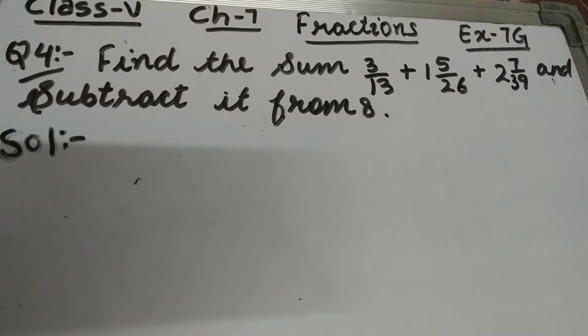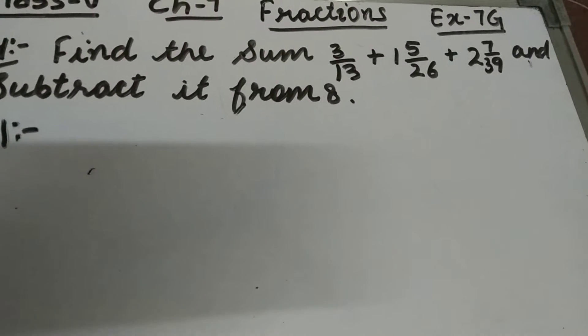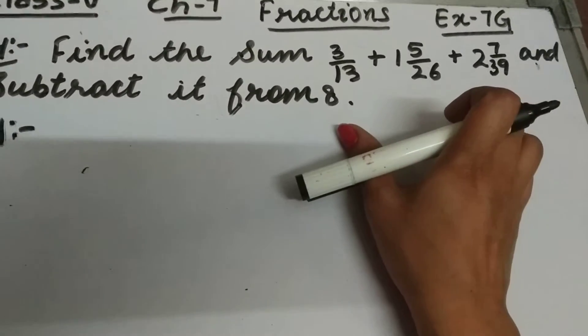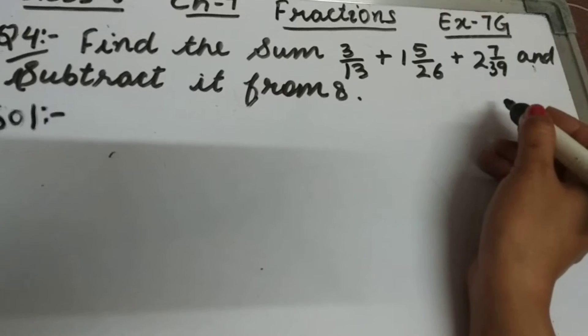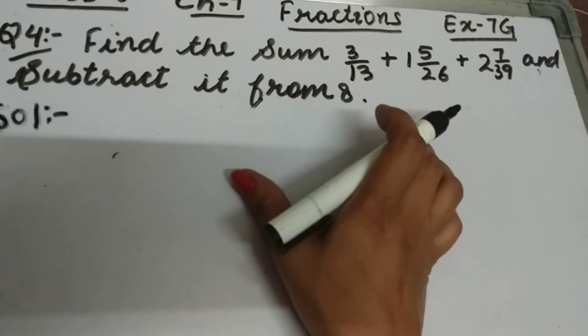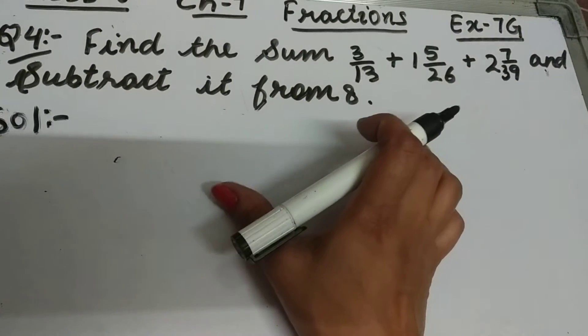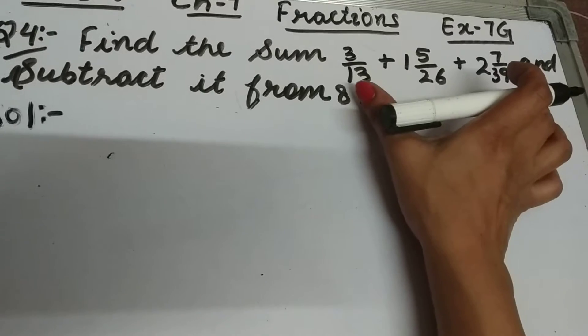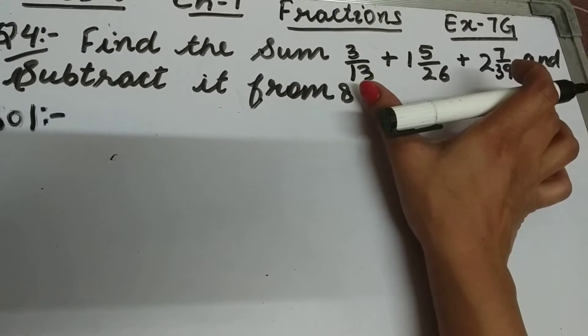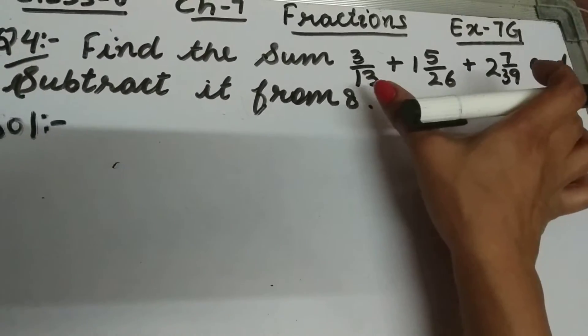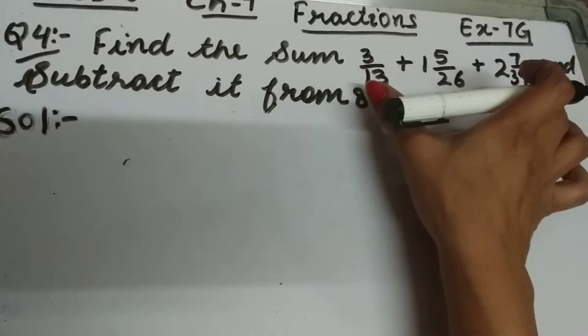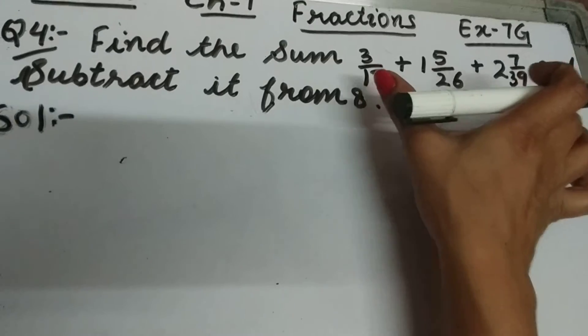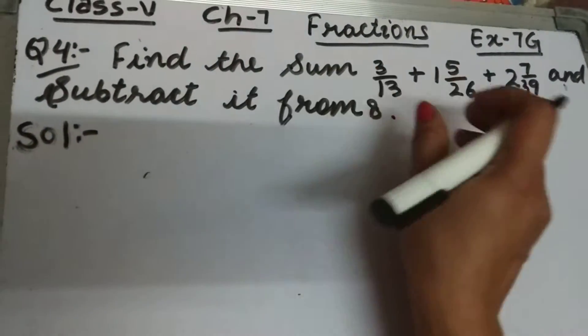Let's start question number 4 of exercise 7G. The question is: find the sum 3 upon 13 plus 1 5 upon 26 plus 2 7 upon 39, and subtract it from 8. So what we'll do first of all, we'll find the sum of these 3 fractions, and after that we will subtract this sum from 8. So firstly we'll convert this mixed fraction into improper fraction.